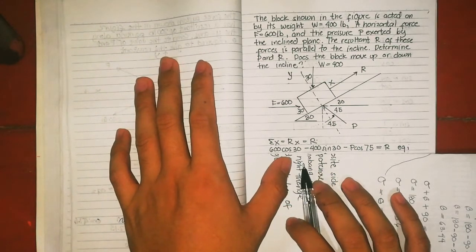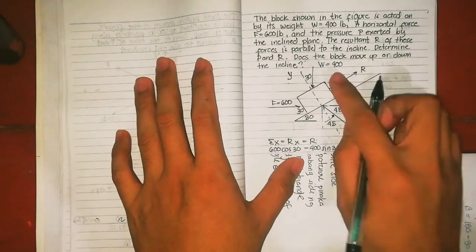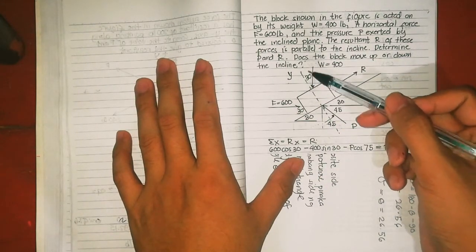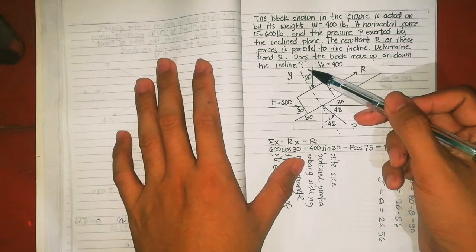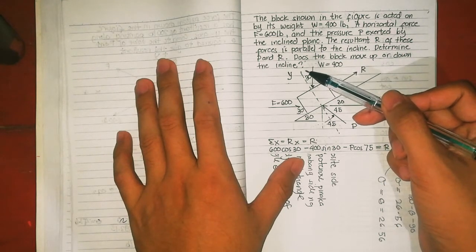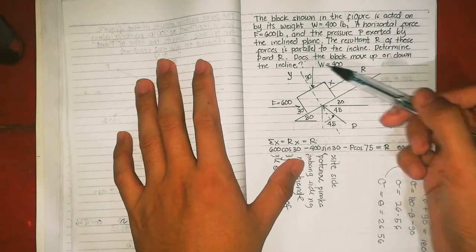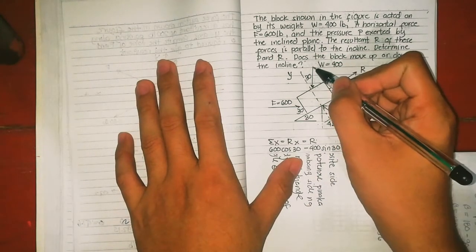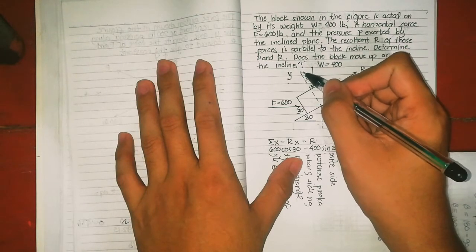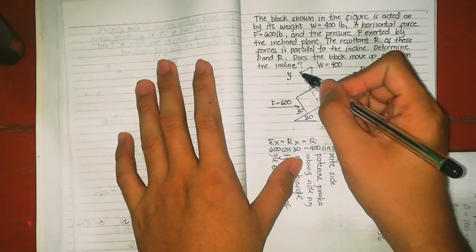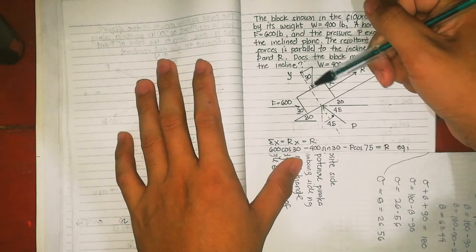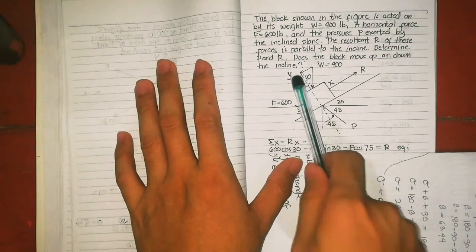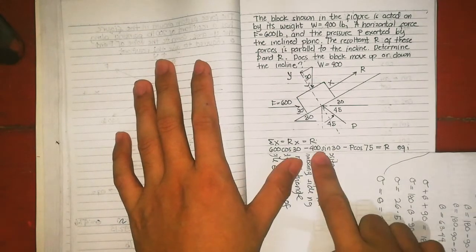Then the 400, the weight, is 400 going downward. The orientation has the opposite side and hypotenuse, so negative 400 sin 30 because the force is from tail pointing down.